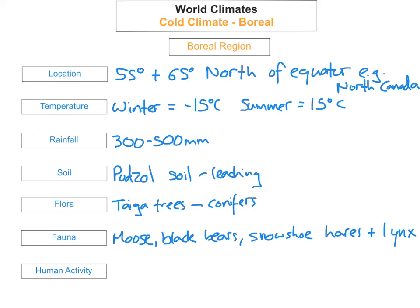The last one is human activity. Forests have become threatened because of industry starting to extract the wood, and wood has been extracted for logging. Also, animals are being hunted in the boreal region, usually because of their fur. There's also been a large increase in the construction of hydroelectric facilities, particularly in Canada, and this has led to large areas of forestry being cut down in order to enable that construction.